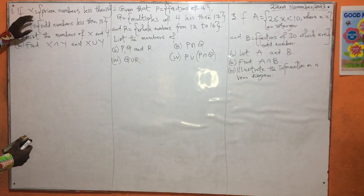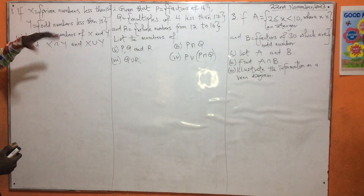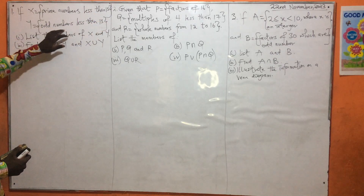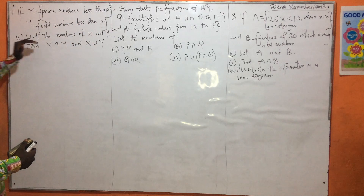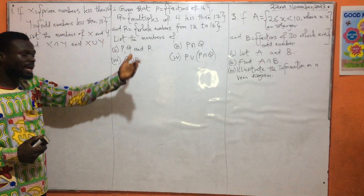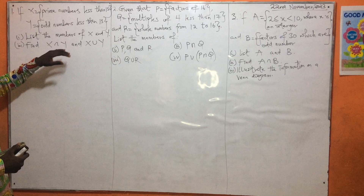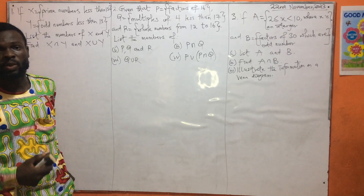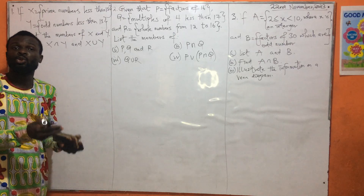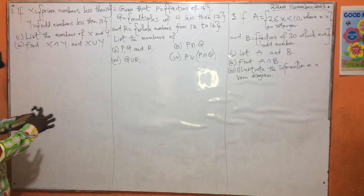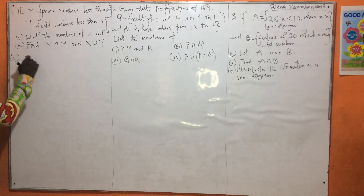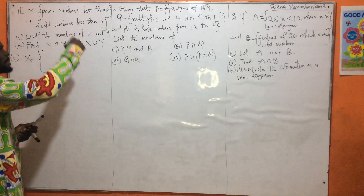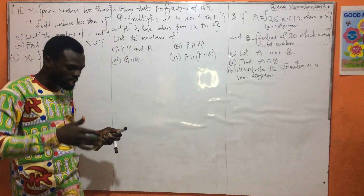It says that if X is given as the set of prime numbers less than 13, and Y is odd numbers less than 13, list the members of X and Y and find X intersection Y and X union Y. Now whenever you have been asked to list, we should know what the rational number is here.